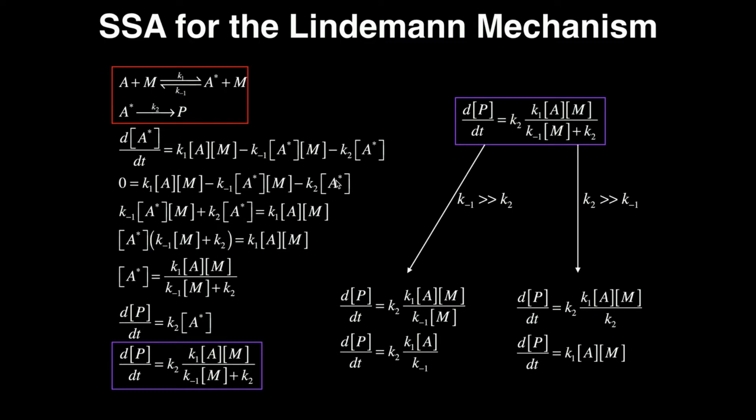Now remember what we're trying to do after we set the derivative equal to zero. Whatever this species was, this intermediate, we want to solve for its concentration. So I need to get all the A stars on one side. So I'm going to add all of these A star terms over to the other side. So I get as positive K-1[A*][M] plus K2[A*]. And then I'm left with on the other side K1[A][M].